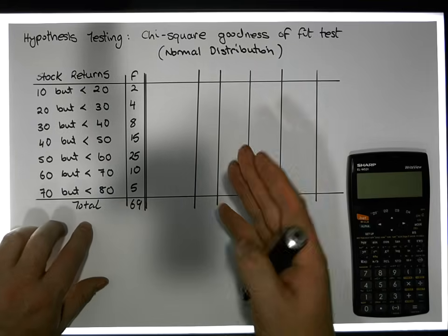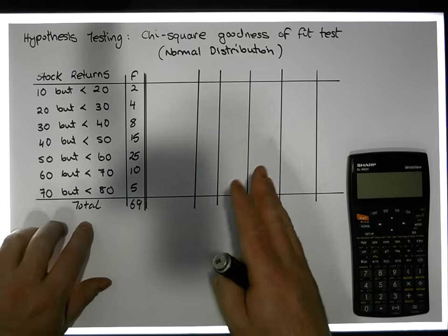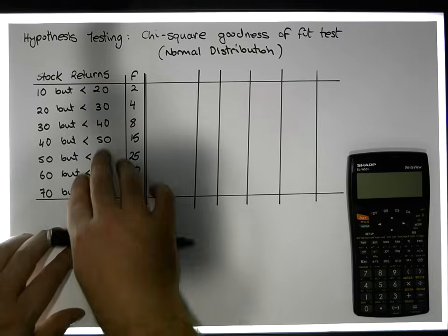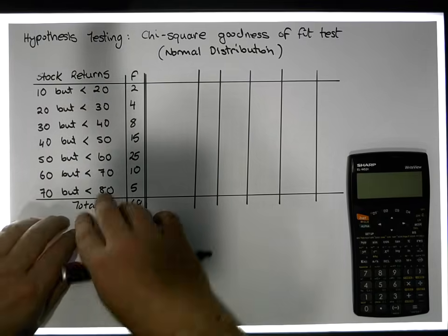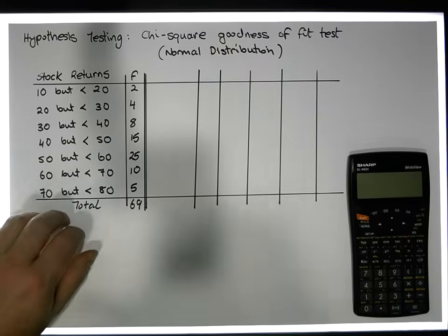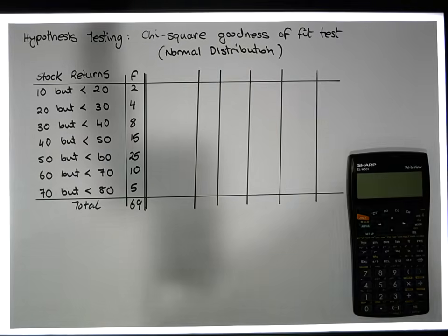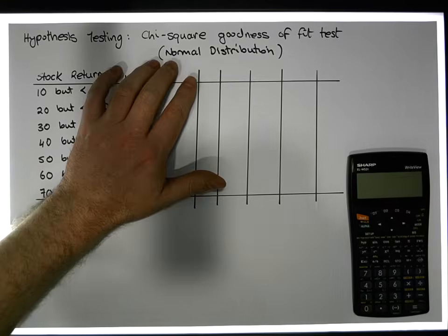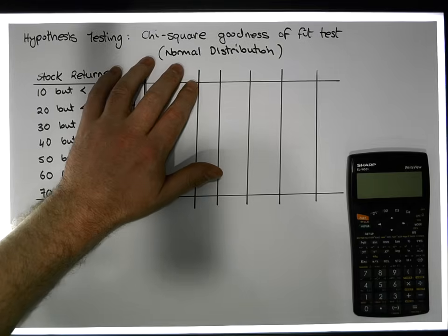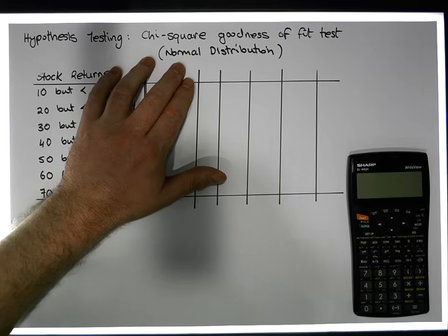Actually, the real question we're asking from a hypothesis perspective is: is there evidence to suggest that the observed distribution does not conform to a normal distribution? There are a number of things we'll have to do and assumptions we'll have to make. Keep in mind that when dealing with a normal distribution, the associated variable is continuous and extends from negative infinity to positive infinity.